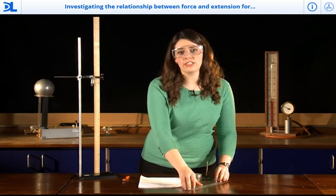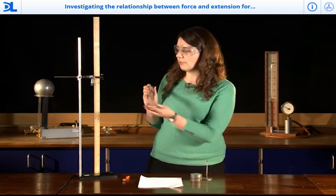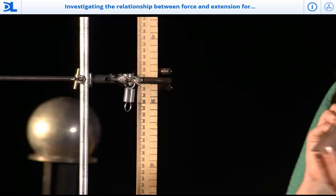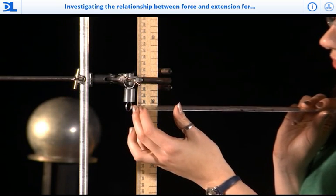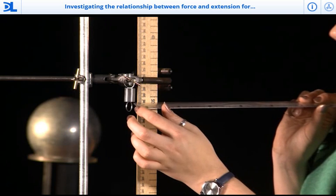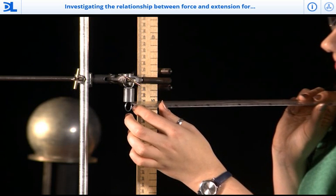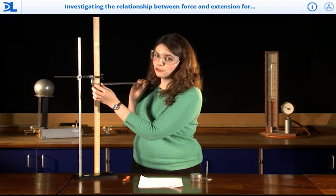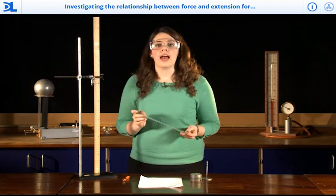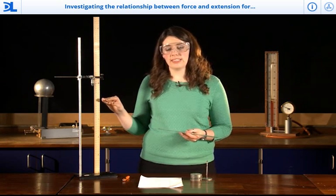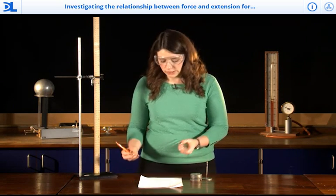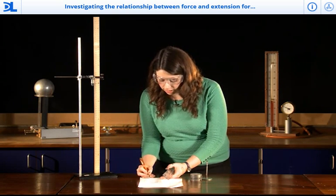The first thing I need to do is measure my original length, and I'm going to do that using the second ruler here to make my measurement as precise as possible. If I choose to measure always from the bottom of the spring, I can see that this is at 50 centimeters, or 0.5 meters. Every time I take a measurement, I need to minus 0.5 meters, and I'll get the extension of the spring.